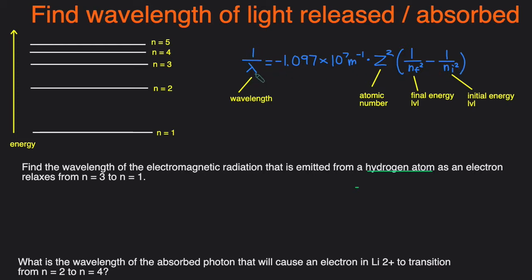On the left hand side you have 1 over the wavelength, or just the inverse of the wavelength. Then you have Rydberg's constant which typically will be given to you on the exam. Then you have Z which is the atomic number, and then you have n_f which is the final energy level and n_i which is the initial energy level.